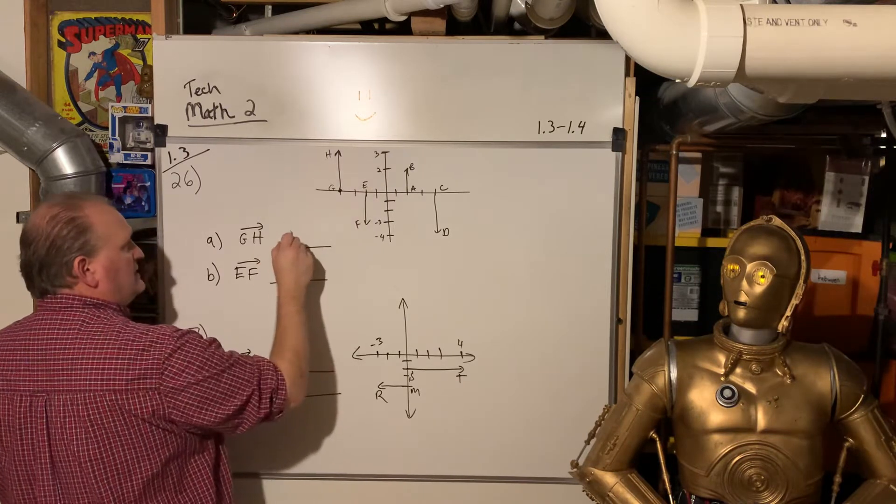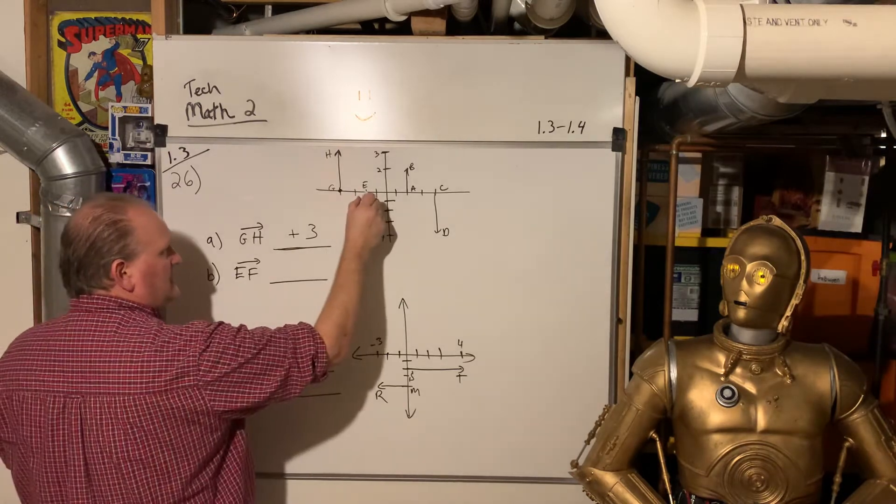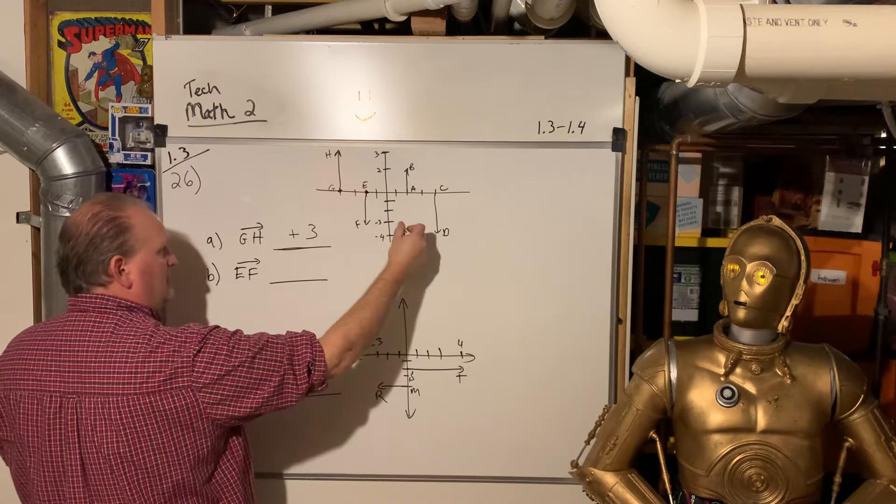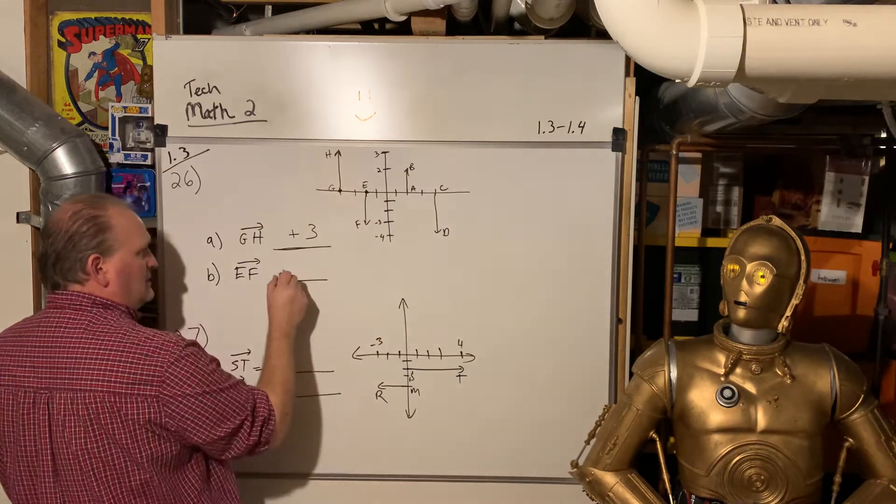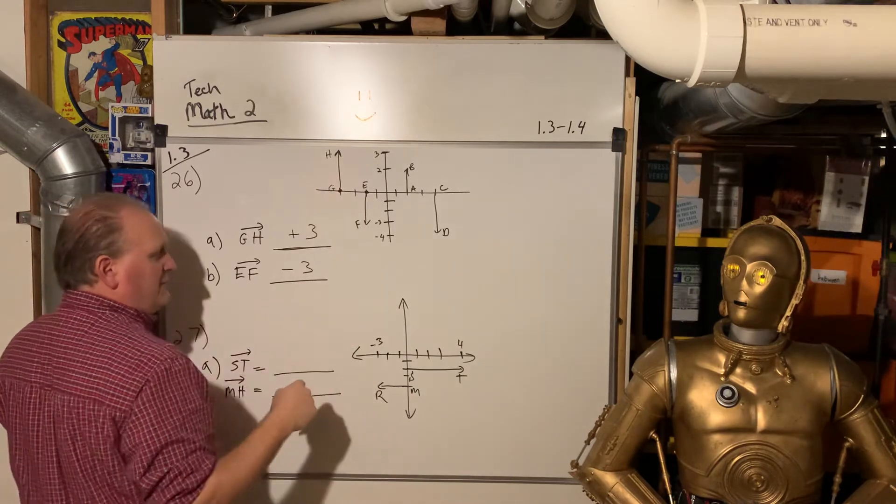So we say that's got a positive 3. EF, that starts at 0 on the y-axis, and it goes exactly straight down and stops at negative 3. So that's got a negative 3. So relatively straightforward.